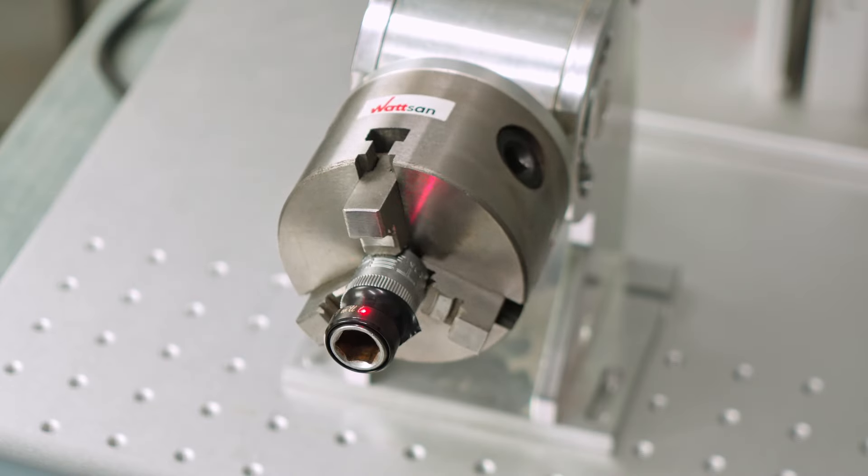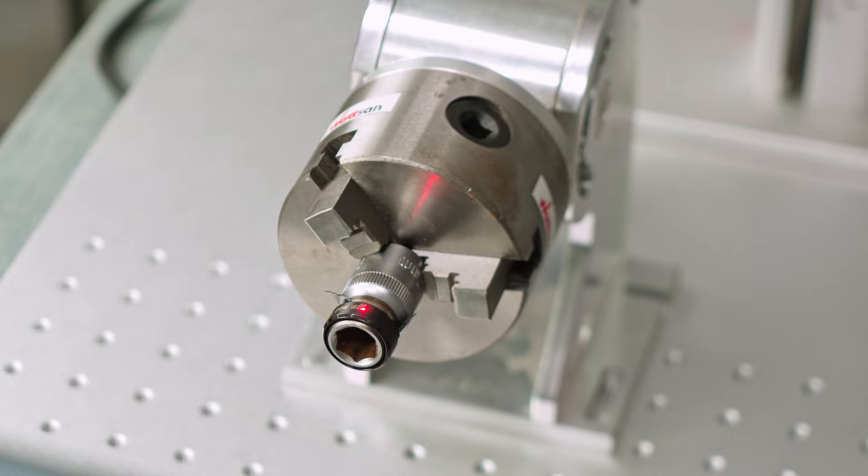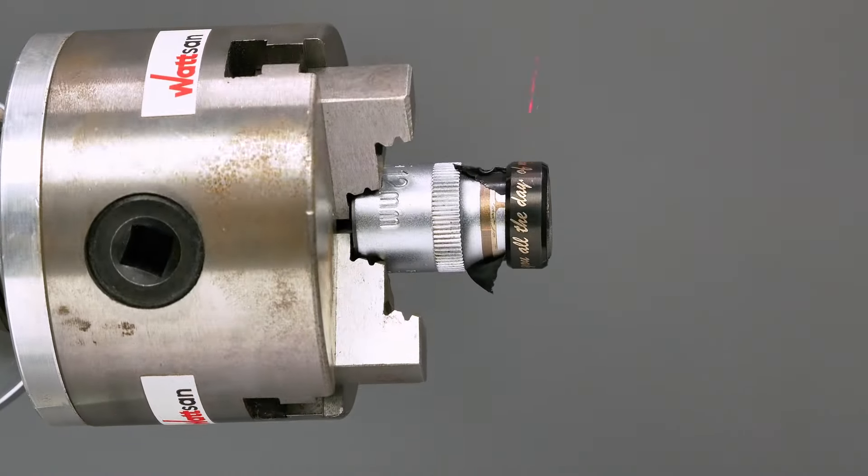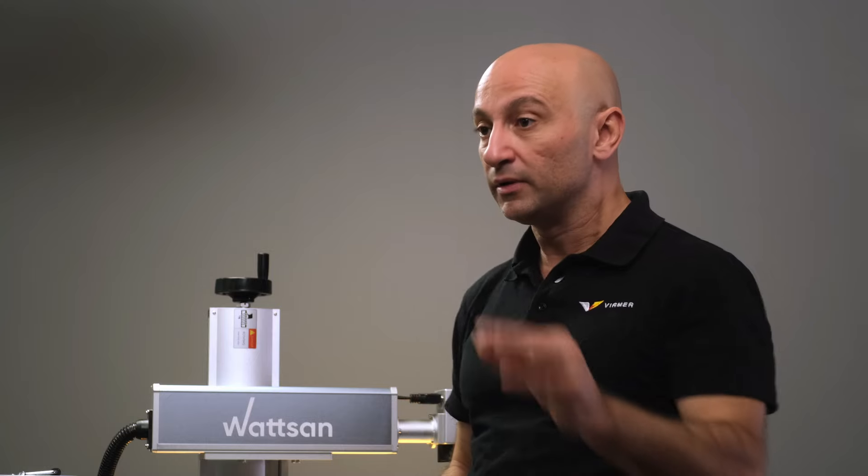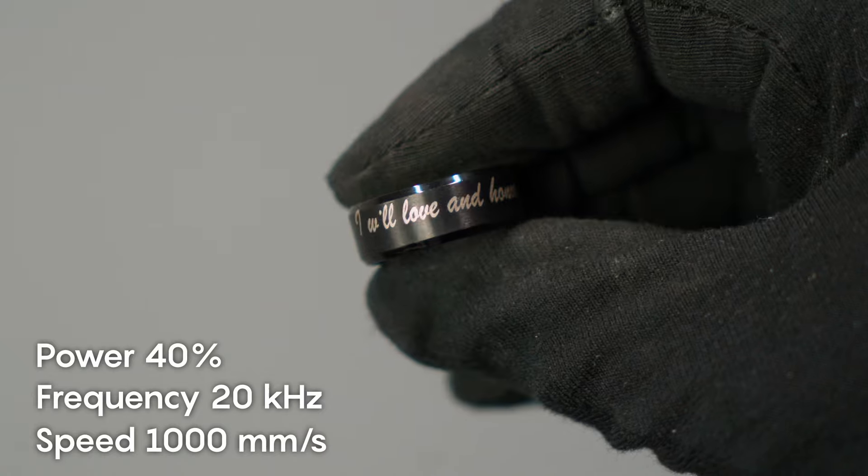By the way, this material is quite interesting. The same engraving can look different depending on the color of the ring. For example, the engraving on the black ring will be light gold or grey. So, this is our ring. You can see the parameters on the screen.